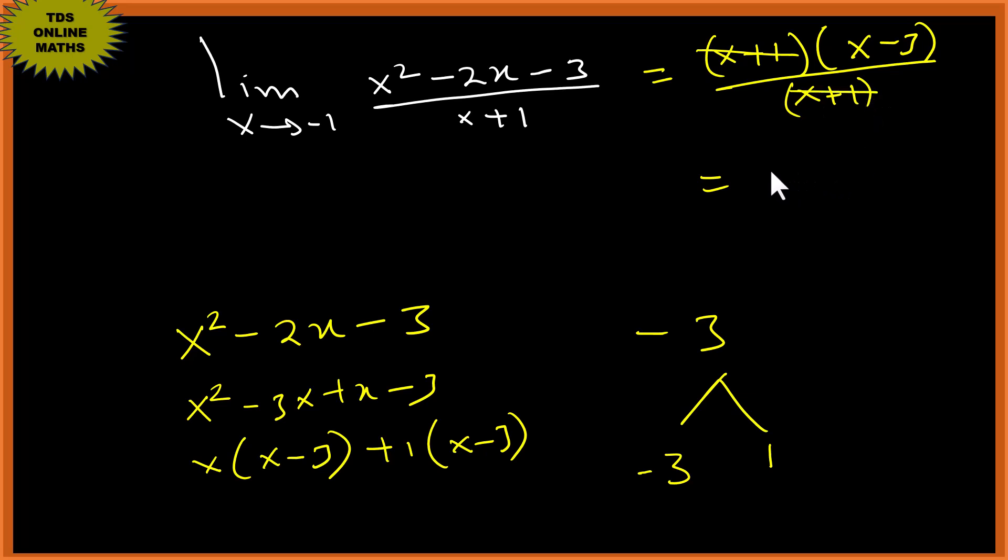we're left with x minus 3. I can go ahead and plug in the limiting value, which will make this negative 1 minus 3, giving us negative 4. So the result for this one is negative 4, as simple as that.